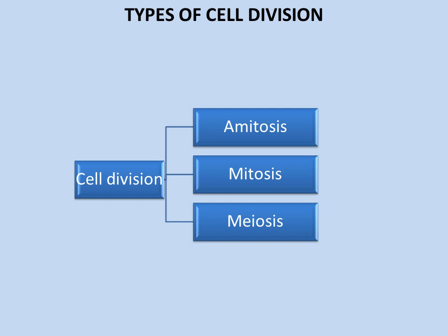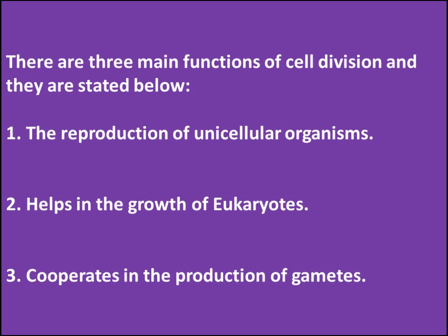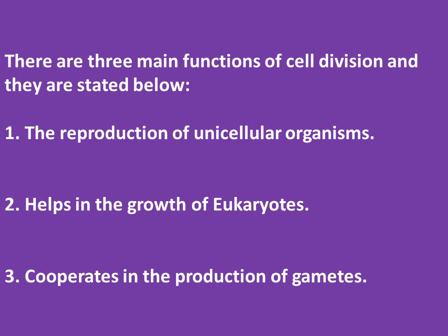Mitosis is basically vegetative reproduction and meiosis is reproductive reproduction. There are three main functions of cell division: number one, the reproduction of unicellular organisms; number two, it helps in the growth of eukaryotes; and number three, it cooperates in the production of gametes.